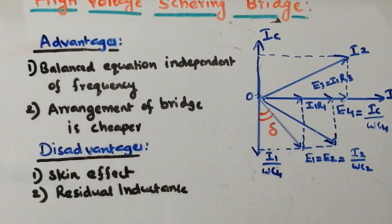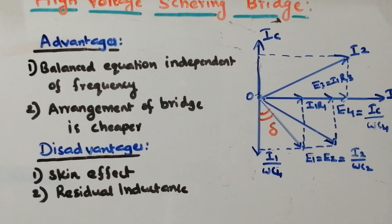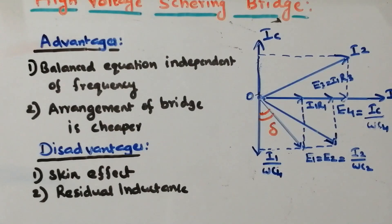When I talk about drawbacks: the skin effect is a major disadvantage — it may cause a heating effect, and losses will also increase because it is operating with high voltage AC. Similarly, because of connecting leads, residual inductance will arise. Moreover, parasitic capacitance is also another issue of the Schering bridge, as different connecting leads create residual inductance as well as parasitic capacitance. These are the major pros and cons of high voltage Schering bridge.